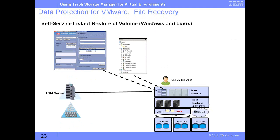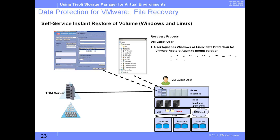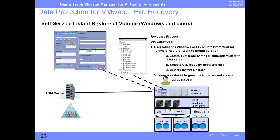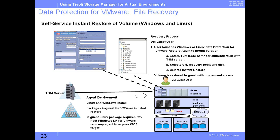On slide number 23, we are looking at self-service instant restore of a volume. In this scenario, we access the VMs as a VM guest user and launch the agent, similar to slide 21. We enter the node name for authentication, select the VM recovery point and disk, and then select instant restore. The disk or partition selected is restored into the guest with on-demand access — the guest disk is overwritten. For this method, you need the agent deployed on your guest machines.